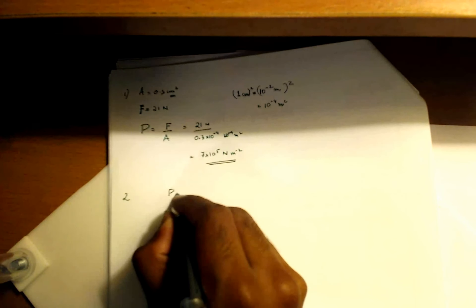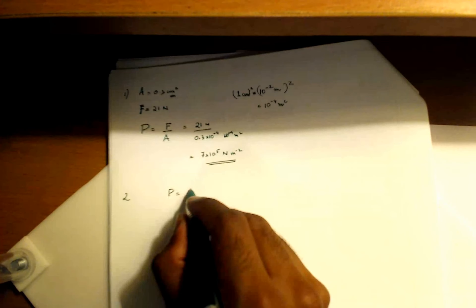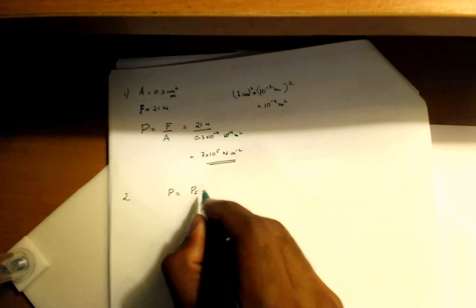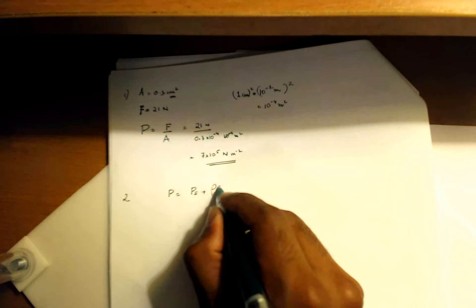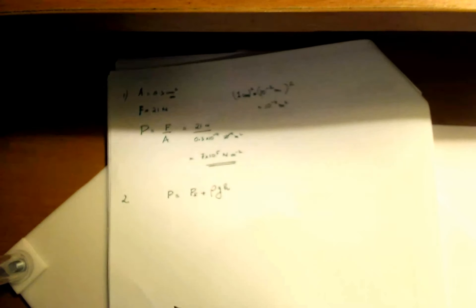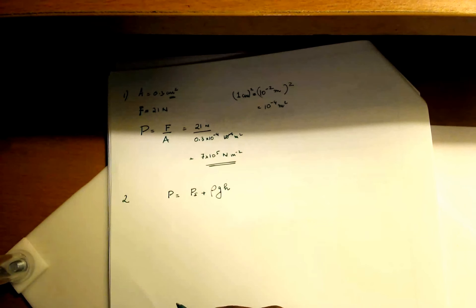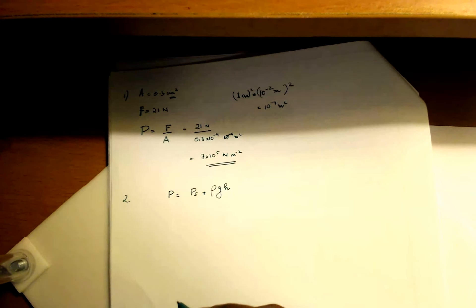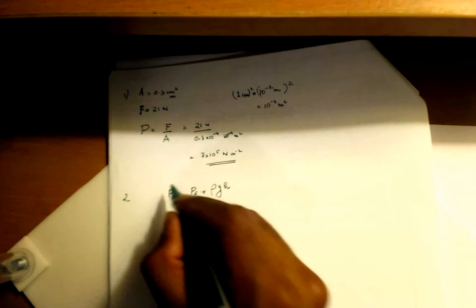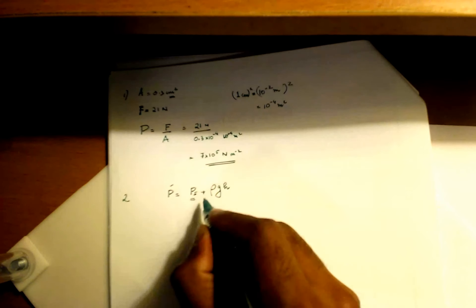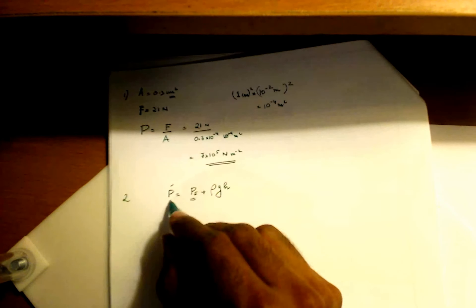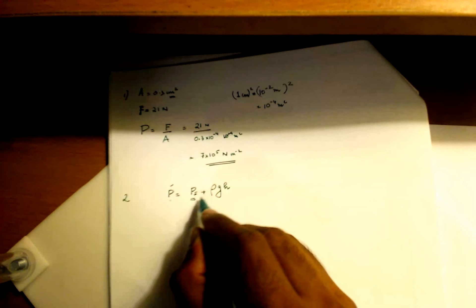The pressure at any depth H is given by the surface pressure plus density times G times height. So this is what we're looking for. We need surface pressure to find the pressure we're looking for.